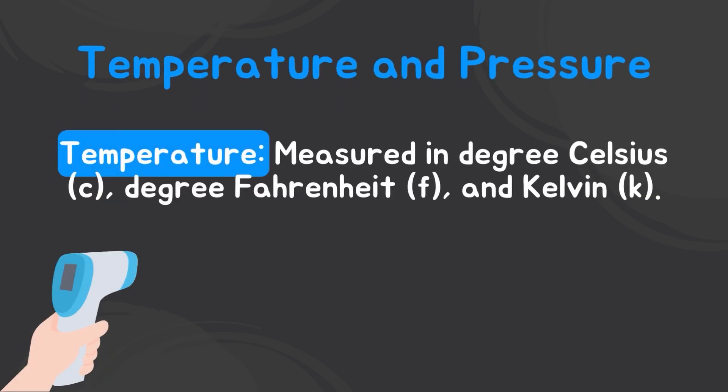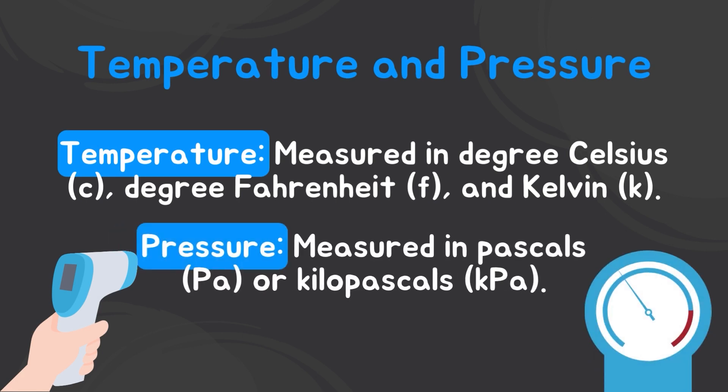Temperature and pressure: when an object is at a higher temperature, it means that the particles inside of the atom are moving at a higher speed. Temperature can be measured in degrees Celsius, degrees Fahrenheit, and Kelvin. Pressure refers to the force that is applied upon an object's area. Force can be a push or pull in one direction. Pressure can be measured in pascals or kilopascals.